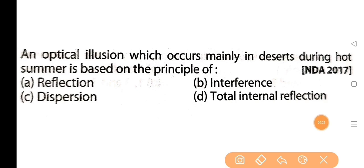First question: an optical illusion which occurs mainly in the desert during hot summer is based on the principle of — this question is about the form of the sun.